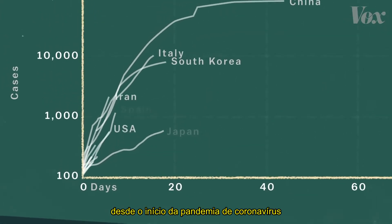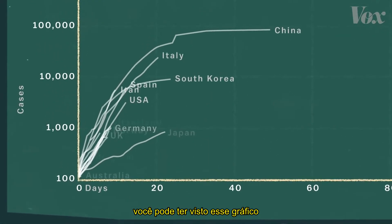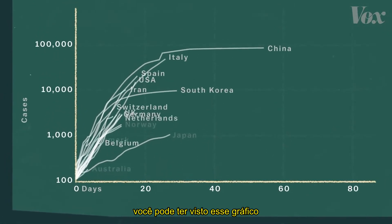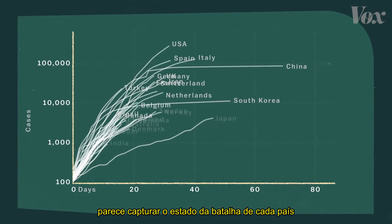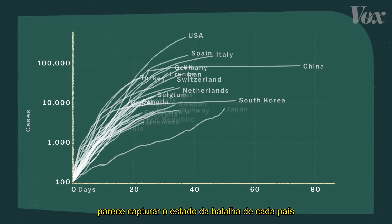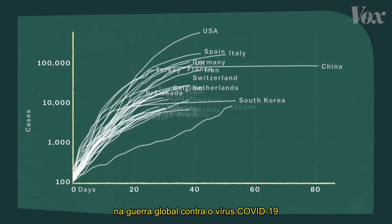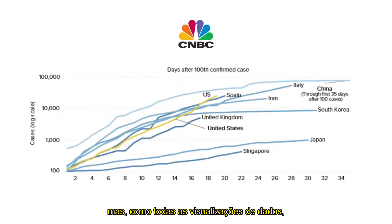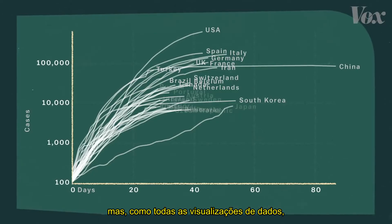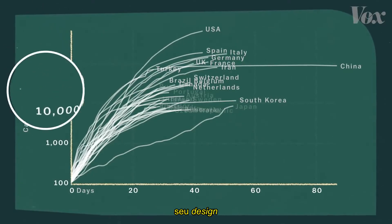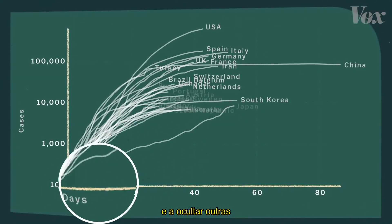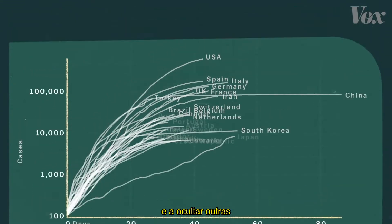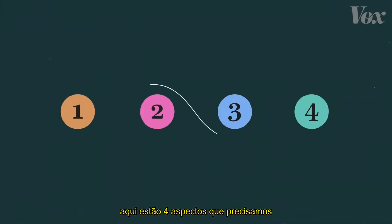You may have seen this chart since the start of the coronavirus pandemic. In one image, it appears to capture the state of each nation's battle in the global war against the virus. But like all data visualizations, its design tends to emphasize some things and hide others. So here are four things we need to know to understand this chart.